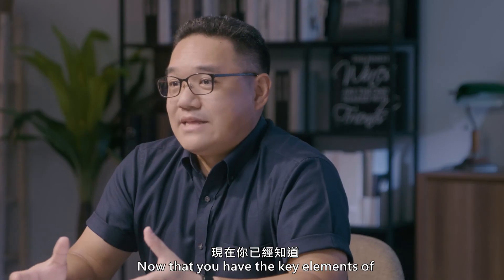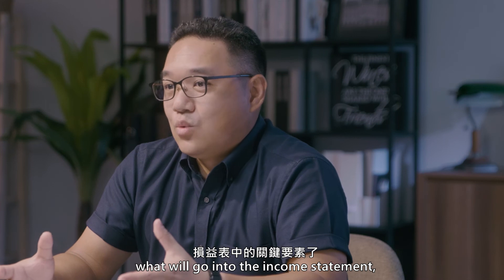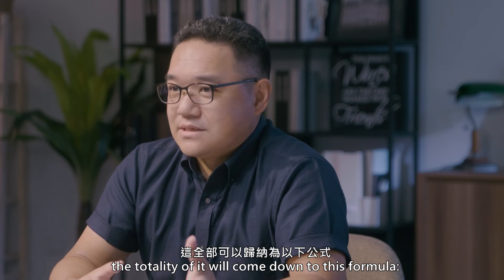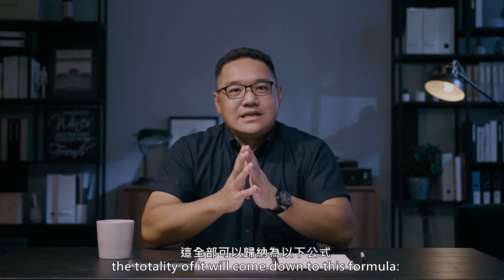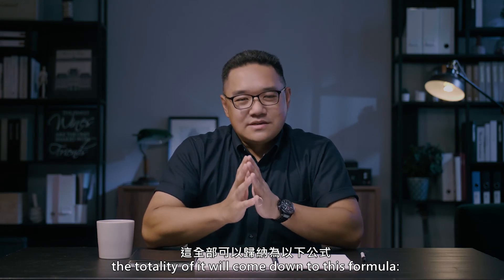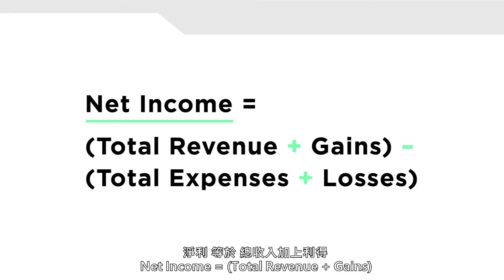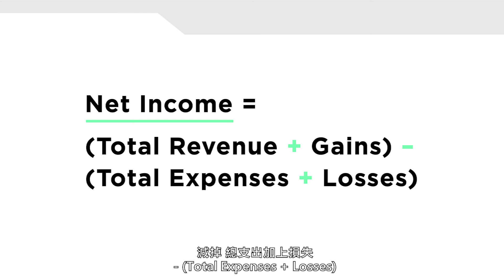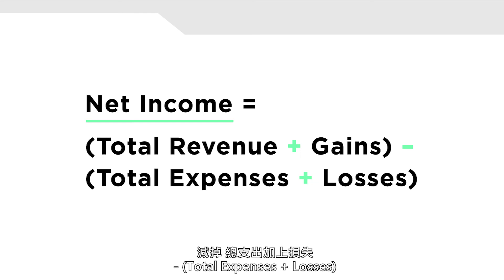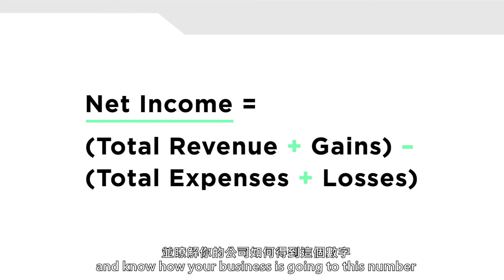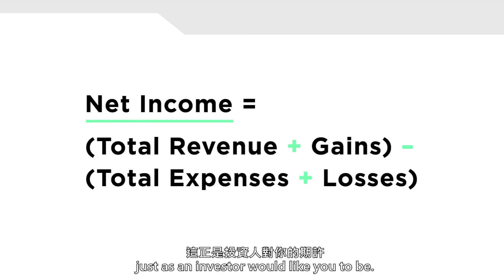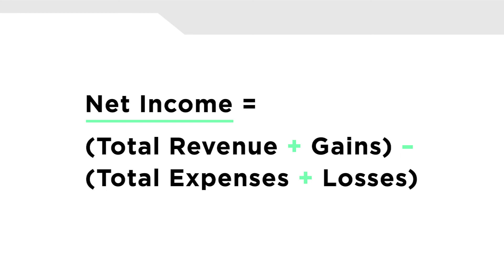Now that you have the key elements of what will go into the income statement, the totality of it will come down to this formula: net income is equal to total revenue plus gains minus total expenses plus losses. You need to be confident and know how your business is going to achieve this number, just as an investor would like you to be.